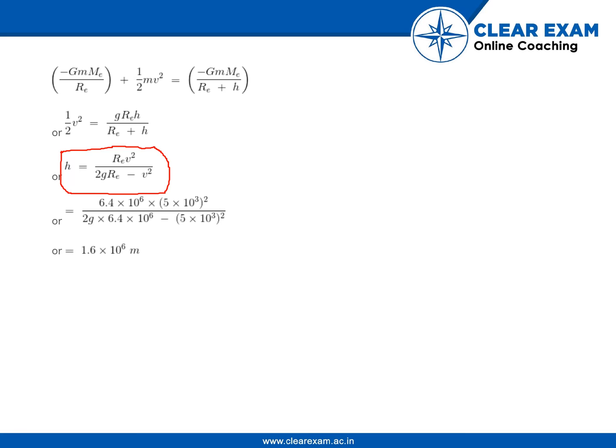Calculating the above, you will be getting 1.6 × 10⁶ meters. Hence the distance achieved by the rocket from Earth's center is R + h, which equals 6.4 × 10⁶ + 1.6 × 10⁶ = 8 × 10⁶ meters.